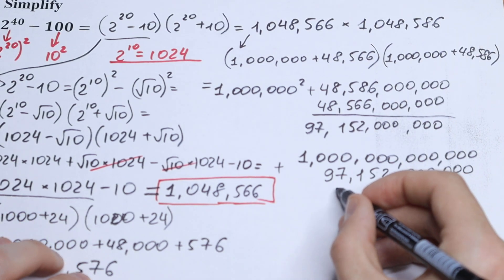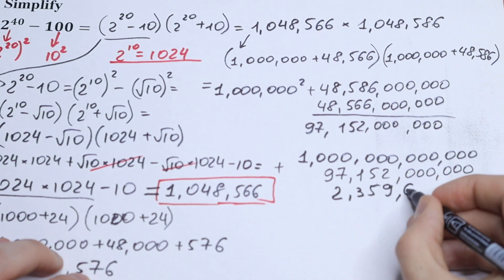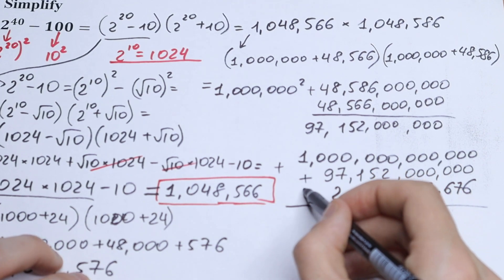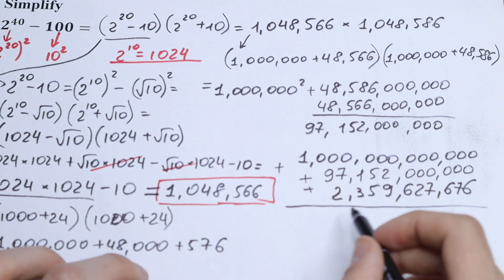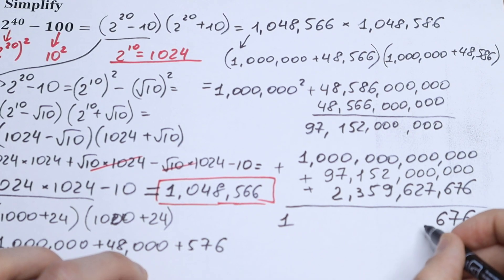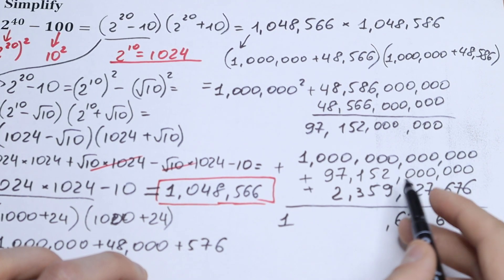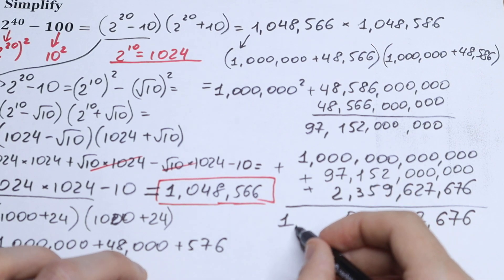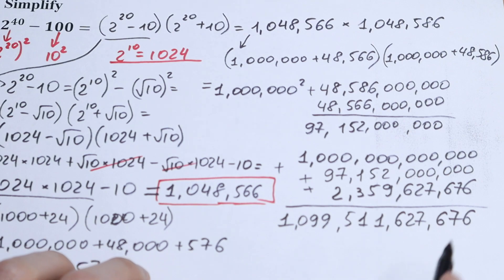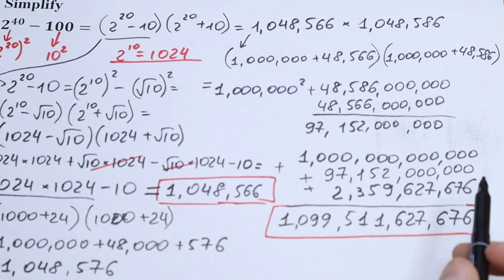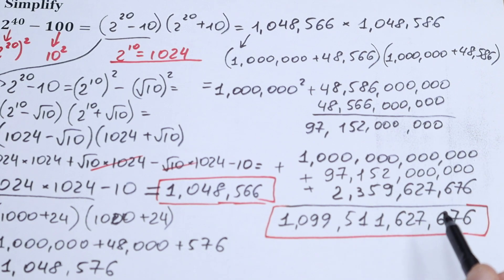Adding all three parts together: 1,000,000,000,000 plus 97,152,000,000 plus 2,359,627,676 gives our final answer of 1,099,511,627,676. This is the value of 2 to the 40th power minus 100.